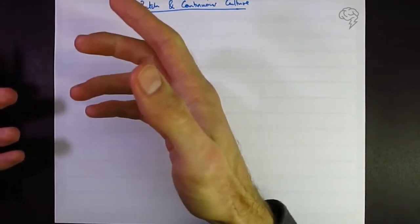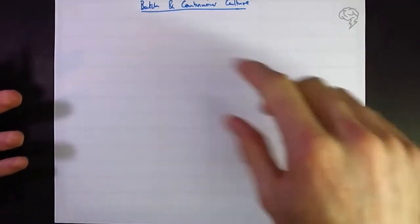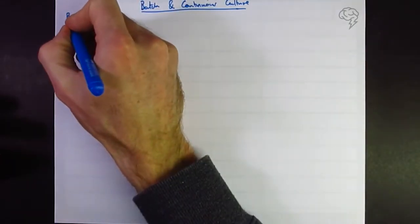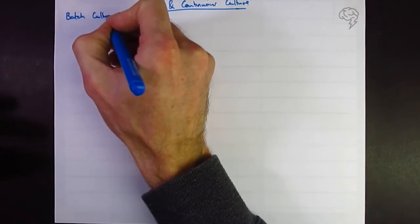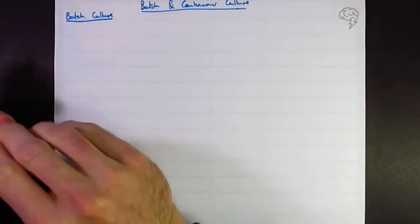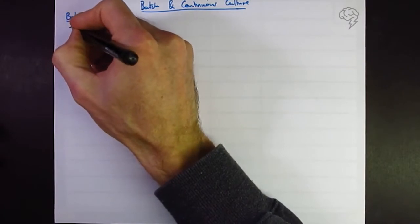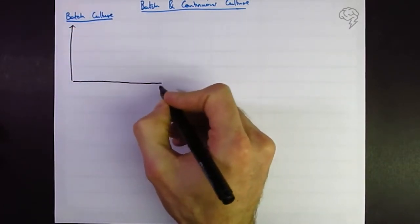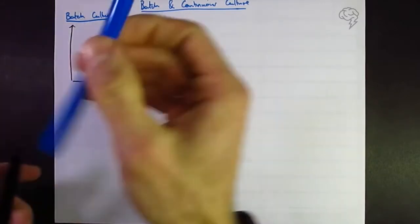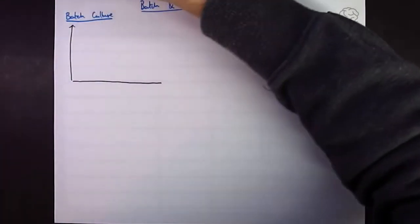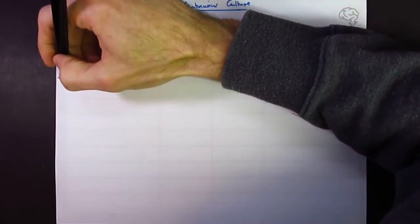So let's look at batch culture first. Culture obviously means just to reproduce microorganisms. The classic graph that you're going to get is going to look like this. I'm just going to finish this depending on where my graph finishes. So the y-axis is going to be the log number of microorganisms.